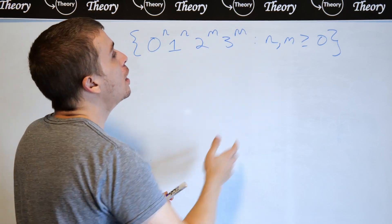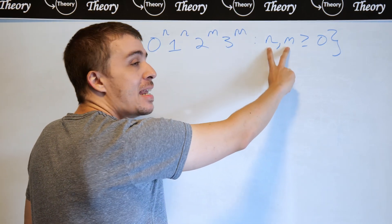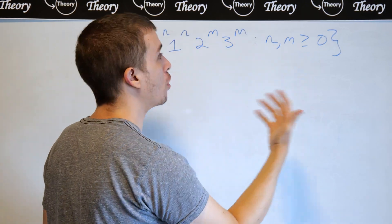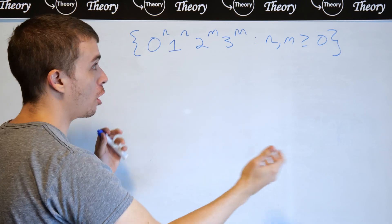We should note that n and m are both at least 0, but there's no correlation between them. They don't have to be equal or one bigger than the other or anything - they're just arbitrary.